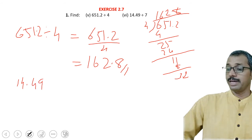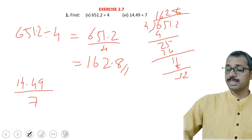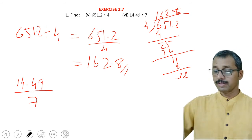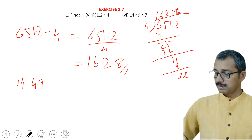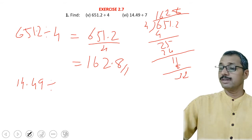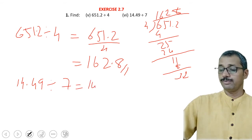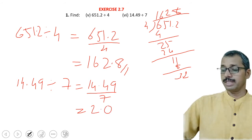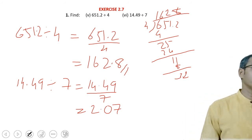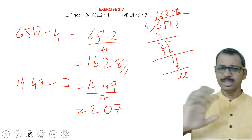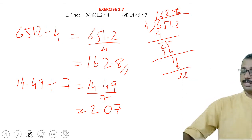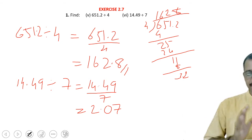The next example is 14.49 divided by 7, which equals 14.49 upon 7. In 14, 7 twos are 14, so 2. Place the decimal point. In 4, 7 will not go, so 0. Since there are two decimal places, the two decimal points must also be there in the answer — that is very important.